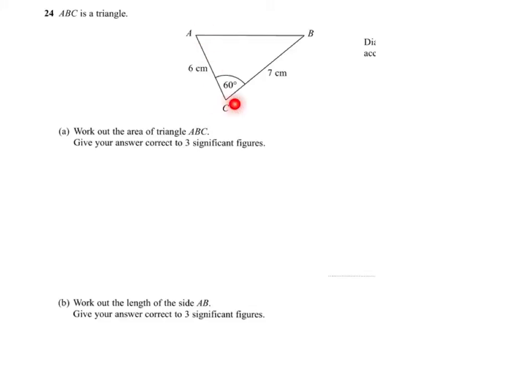ABC is a triangle. We've been given the length AC and CB and we've got the included angle 60 degrees. We're asked to work out the area of the triangle ABC to three significant figures.